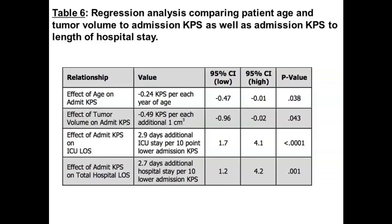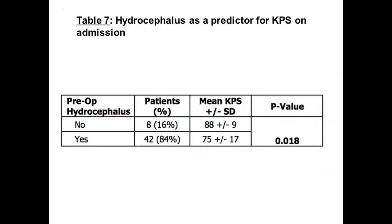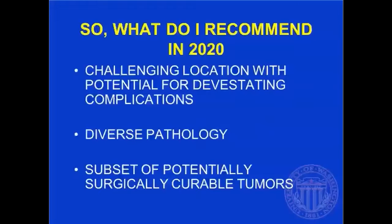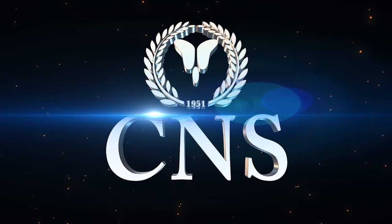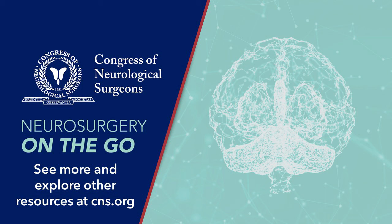This slide is busy, but what it tells you is that in my series the younger patients did better than the older ones in terms of Karnofsky on admission. The bigger the tumor, the more likely they would end up in the ICU — because of the hydrocephalus. Bigger tumor meant more chance of hydrocephalus, and that was a huge predictor by p-value for Karnofsky on admission, which makes absolute perfect sense.